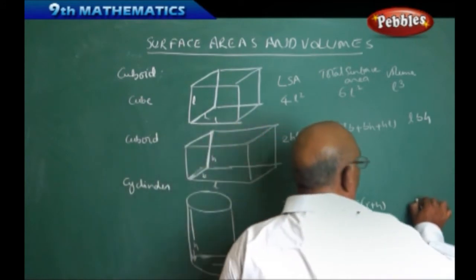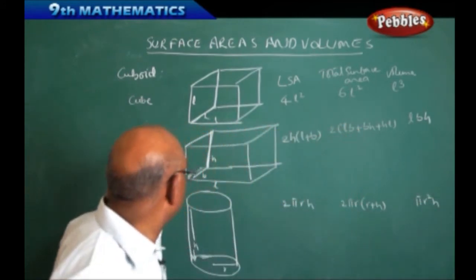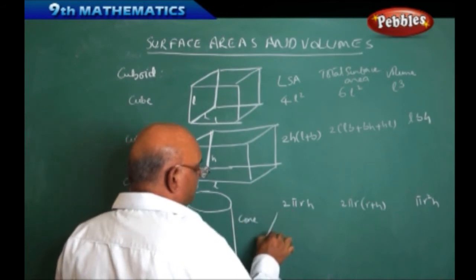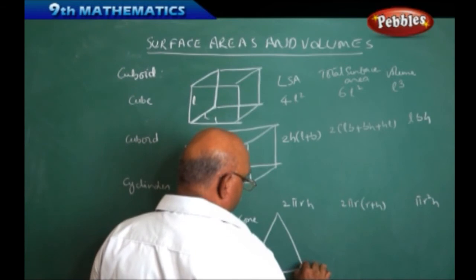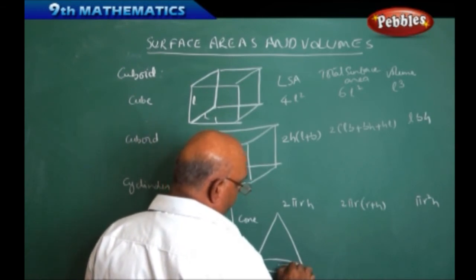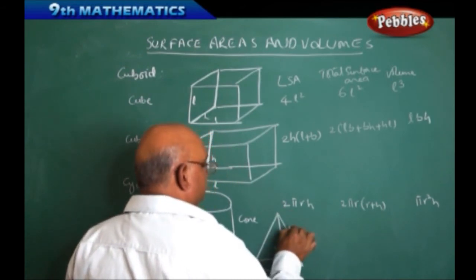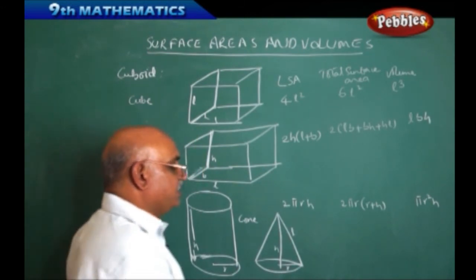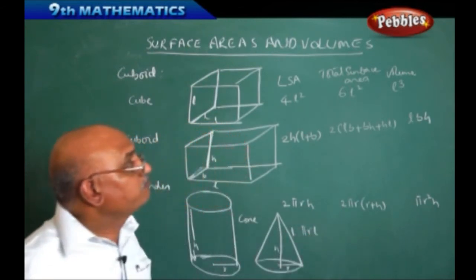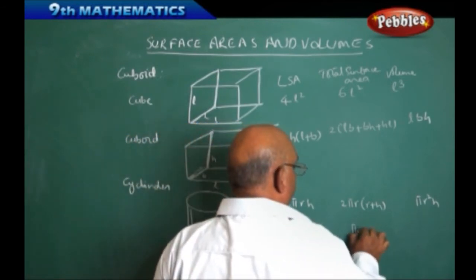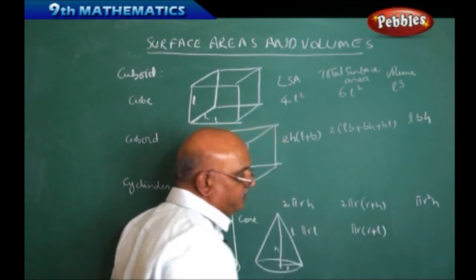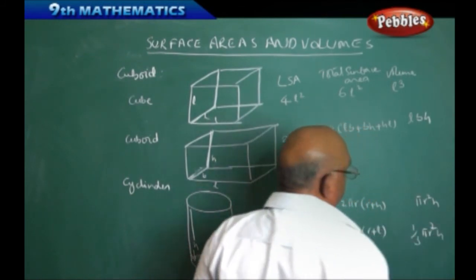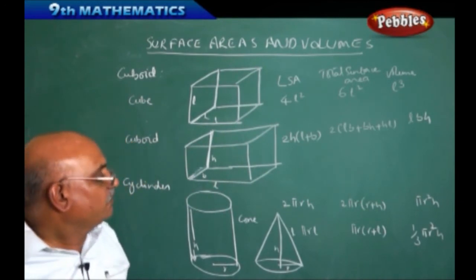Volume is equal to πR²H, the volume of the cylinder. In the same manner, if we think about the cone — cone looks like a top shape. This is going to be radius R, this is the height H, and this is L, the slant height. The lateral surface area is equal to πRL, and the total surface area is equal to πR(R + L). Volume is equal to (1/3)πR²H, the volume of the cone.